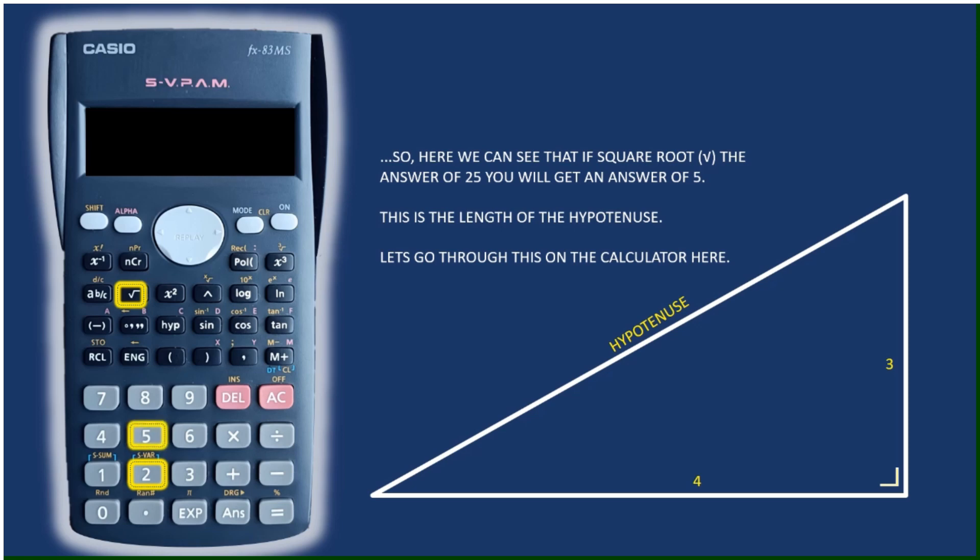So again just hit the square root symbol there highlighted in yellow, hit 25, hit the equal sign and there's your answer 5. So that tells us that the hypotenuse on this particular right angle triangle is 5.